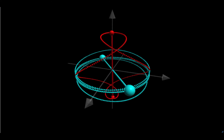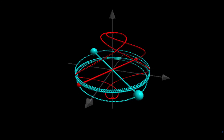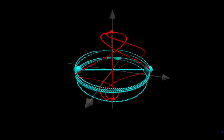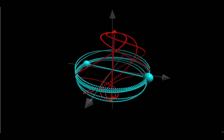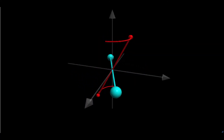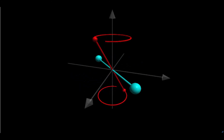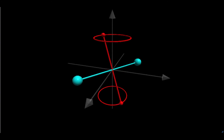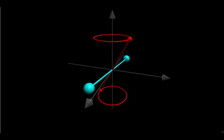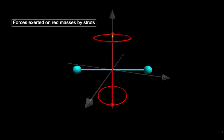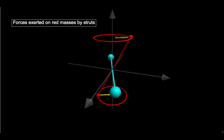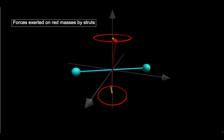Many people will find it intuitively obvious that the small red masses should swing away from the initial axis of rotation and toward the equatorial plane. One way to describe this outward motion is to invoke the idea of centrifugal force. Of course, the red masses are simply moving in accordance with Newton's laws, subject to the forces exerted on them by the struts. For the red masses to stay at the same angle with respect to the rotation axis and not move toward the equator, they would need to move in circles around the z axis. This would require a radially inward force on each mass. But the struts cannot exert a force that is perpendicular to the plane of the body.